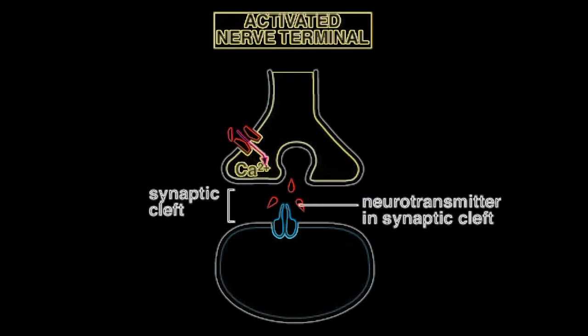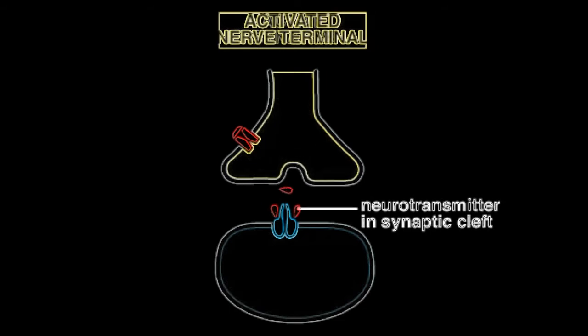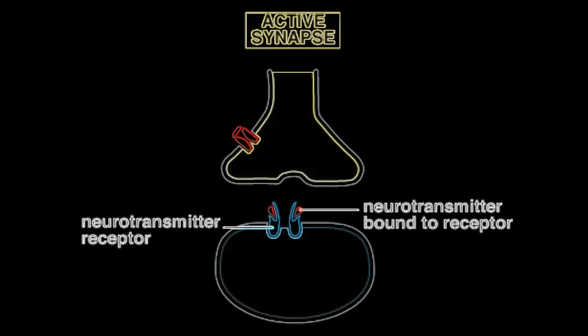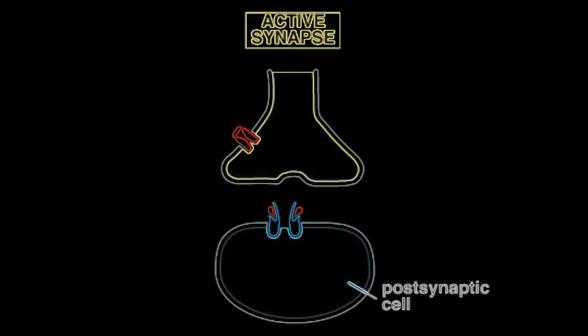The released neurotransmitters diffuse across the synaptic cleft, where they bind to and open the transmitter-gated ion channels in the plasma membrane of the postsynaptic cell.